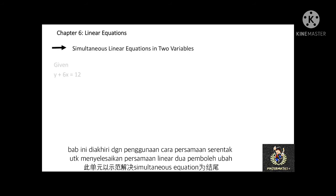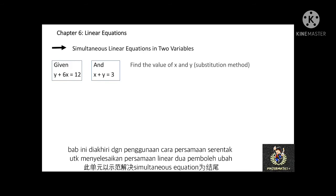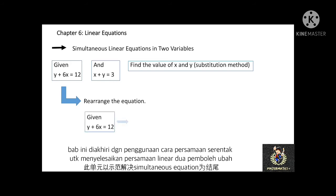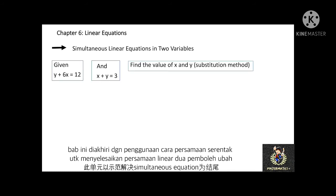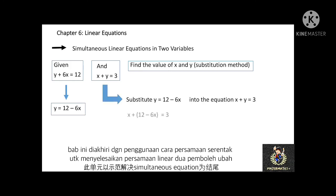The final part of this chapter is simultaneous linear equations in two variables. We can use the substitution method to find variables x and y of these two linear equations: y plus 6x equal to 12 and x plus y equal to 3. This is different from the previous example — in the previous example, one of the equations had only one variable. Here, both equations have two variables: x and y. First, rearrange the equation y plus 6x equal to 12 into y equal to 12 minus 6x. Then, work on the second equation x plus y equal to 3 by substituting y equal to 12 minus 6x, giving x plus bracket 12 minus 6x close bracket equal to 3.